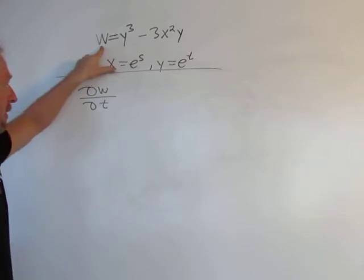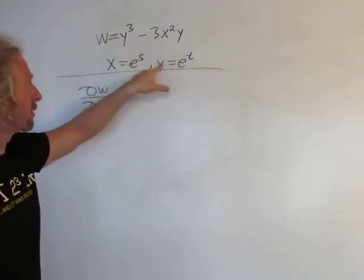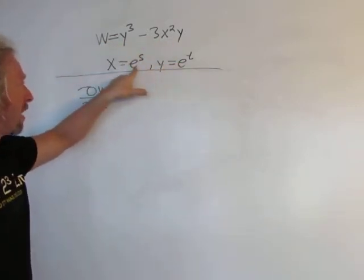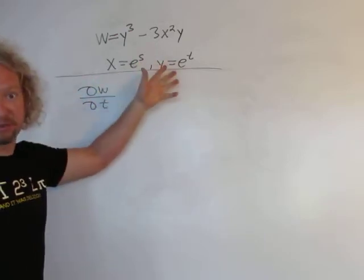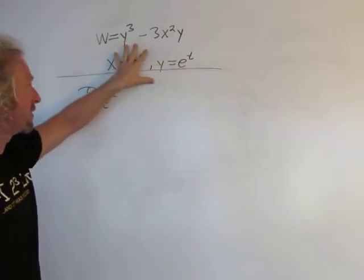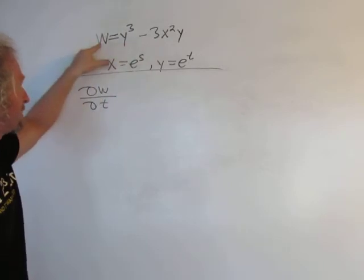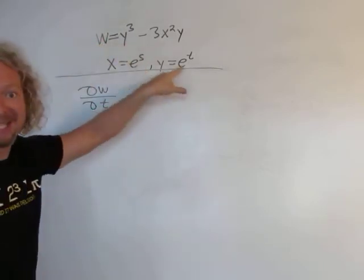So w here is a function of x and y. But you'll notice that y and x are functions of s and t respectively. So these are functions of other variables and then w ends up being a function of actually s and t.